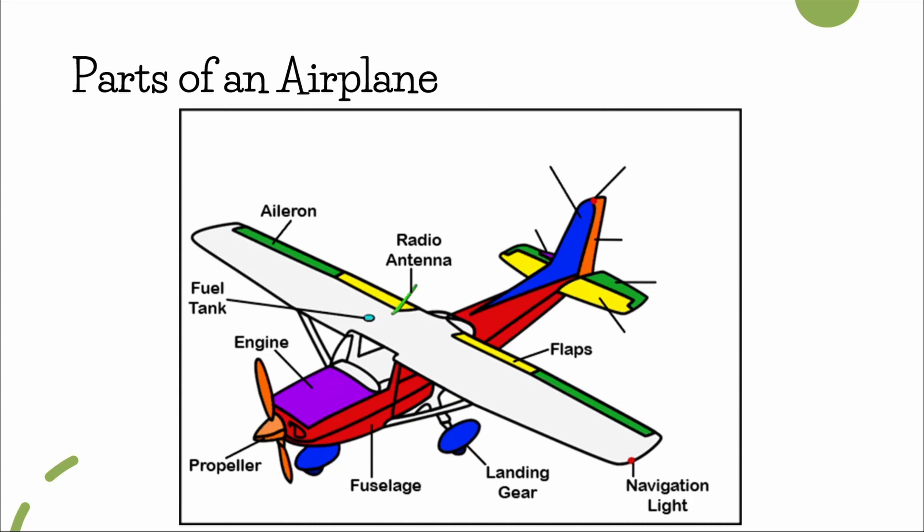Moving over, we can see the flaps and ailerons along the trailing edge of the wing. I remember when I was learning this in ground school, I would always confuse the two, since they are in similar positions and look nearly identical. However, they actually have vastly different purposes.